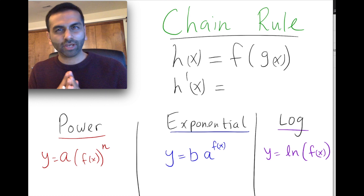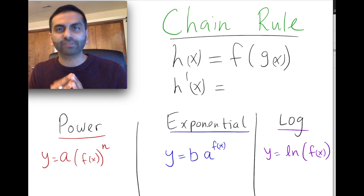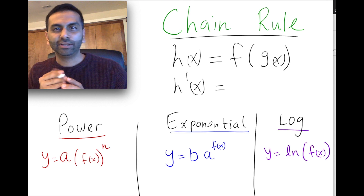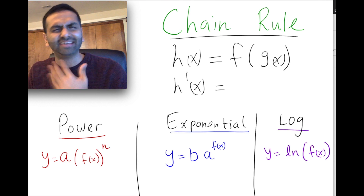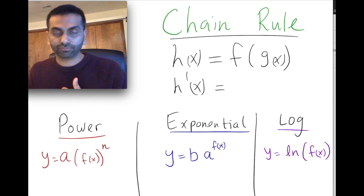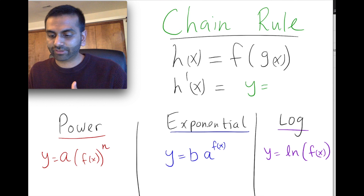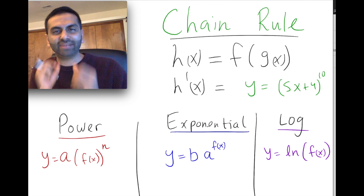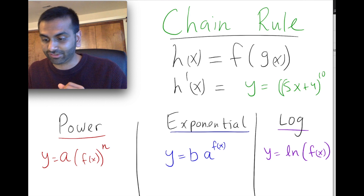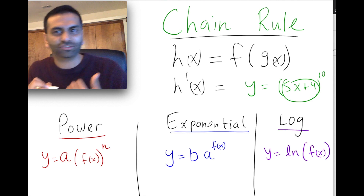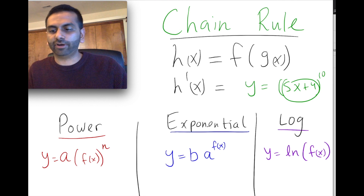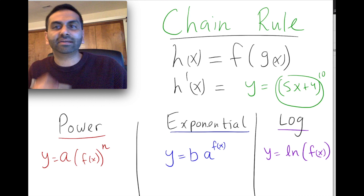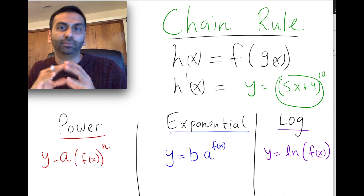In this video we're going to talk about the chain rule. The chain rule is something you need to apply whenever your function is actually a function inside another function. For example, if you have something like y equals (5x + 4) to the 10th power, you kind of have an inside function which is just 5x + 4, and there's also an outer function which is something to the 10th power.